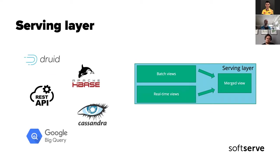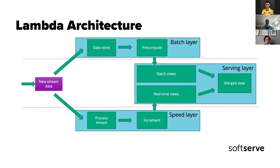For the serving layer, technologies are again multiple and I won't go into much depth. Often it's a REST API serving information to users, with a service behind it that can check the batch view and real-time view. Other solutions include loading data into Cassandra; HBase is often used and was actually designed for this kind of fast data access — it's used by Netflix in their Lambda Architecture. We could also stream into BigQuery, among other databases.